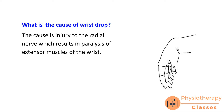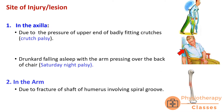The sites of injury of the radial nerve can be at two places: first in the axilla, and second in the arm. In the axilla, there could be two reasons. The first is due to pressure of the upper end of badly fitting crutches, and this is known as crutch palsy.